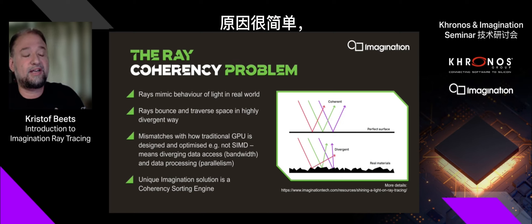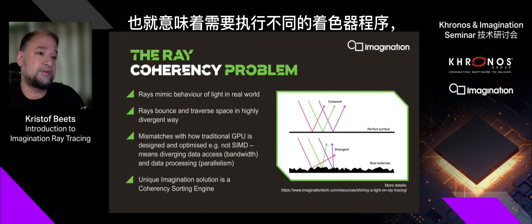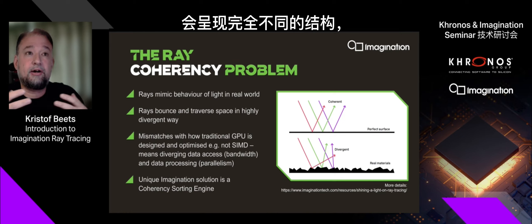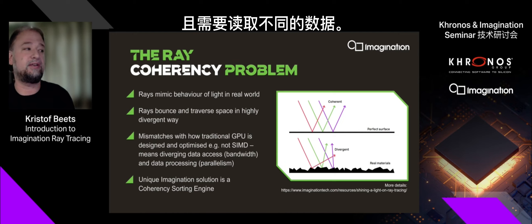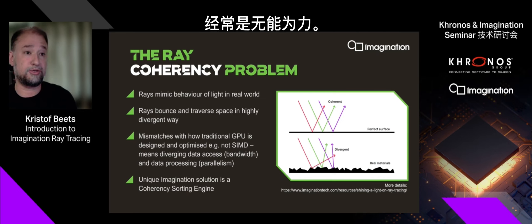GPUs are not very good at dealing with divergence in execution, but also not very good at dealing with divergence in memory and data access. As these rays bounce around the scene, they hit different objects, requiring different shader programs to execute. That kind of branching-like behavior does not work very well. Similarly, as rays process through a scene hierarchy — a kind of volumetric representation of the scene — they hit different boxes and triangles and access different data, which is not effective for a GPU.